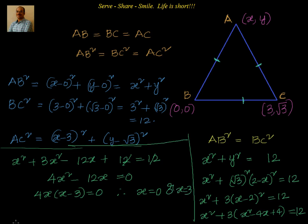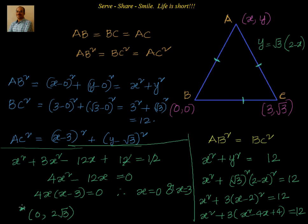If x = 0, substituting into y = √3·(2 − x) gives y = 2√3, so one coordinate is (0, 2√3). If x = 3, then y = √3·(2 − 3) = −√3, giving the coordinate (3, −√3). So the values of (x, y) are (0, 2√3) or (3, −√3).